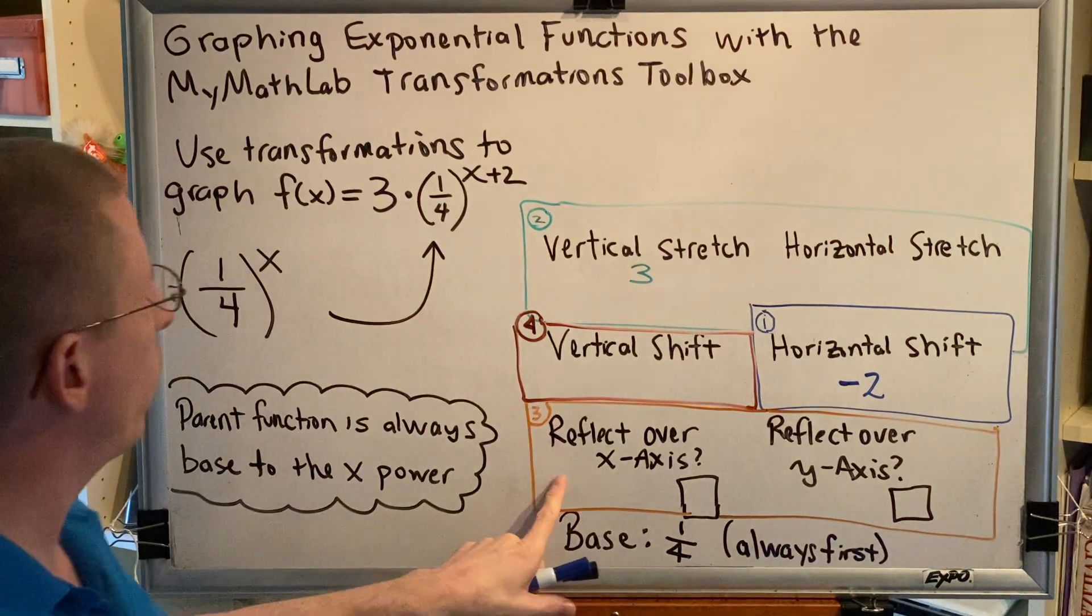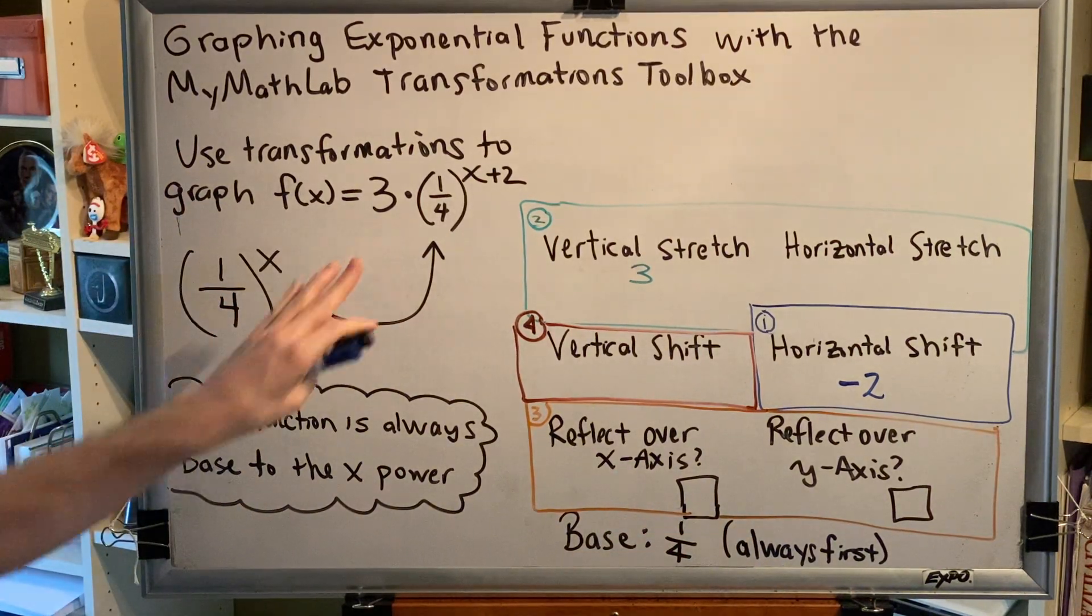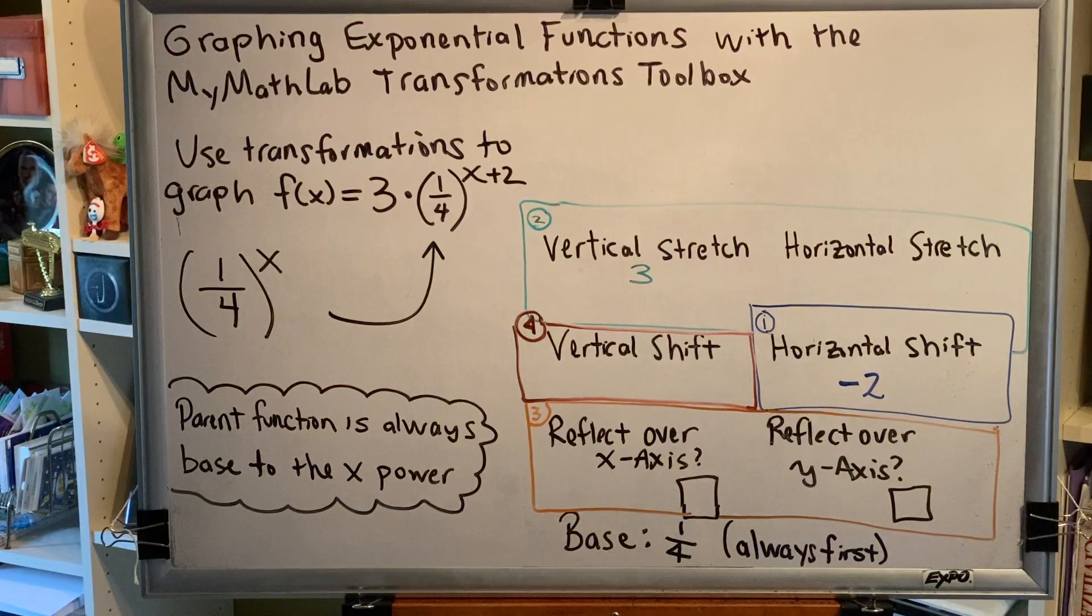Next thing we check for would be reflections over the x or y, which would show up in our equation as a negative. We don't have any of those.